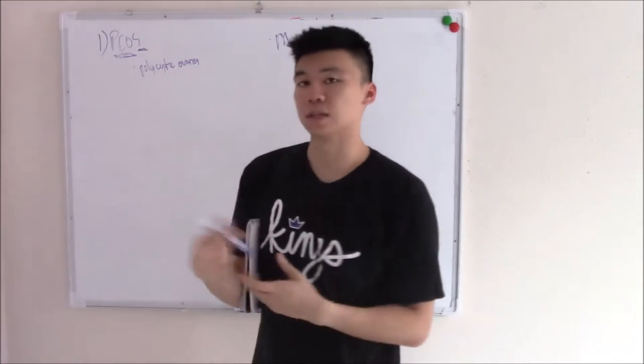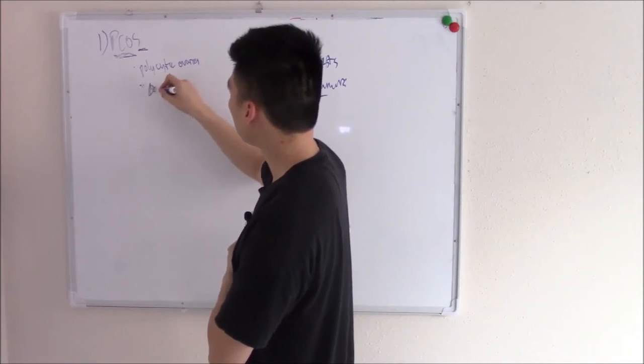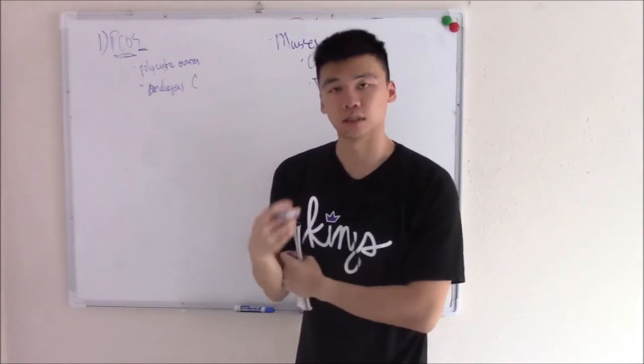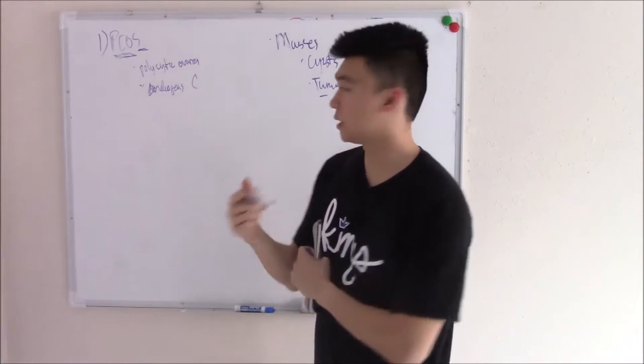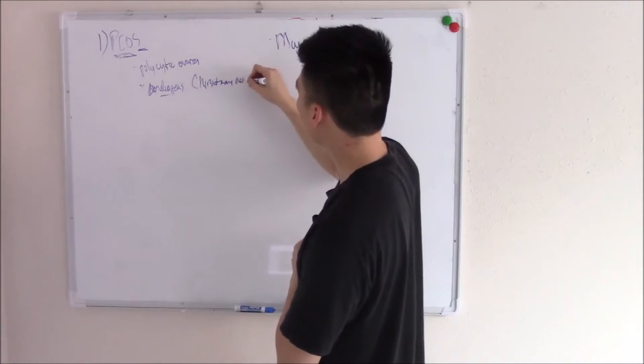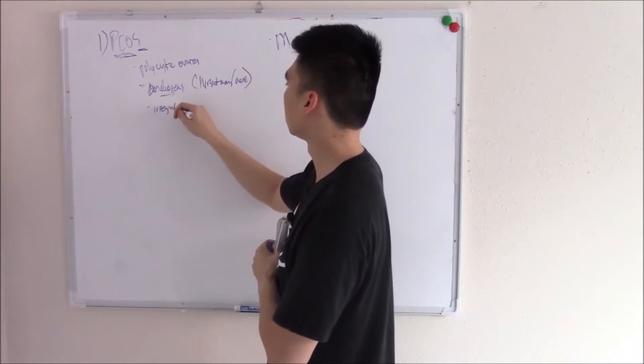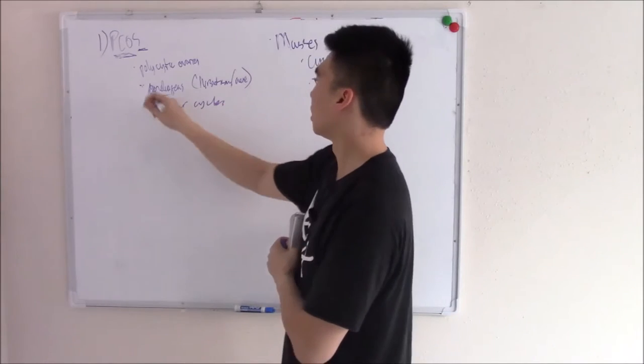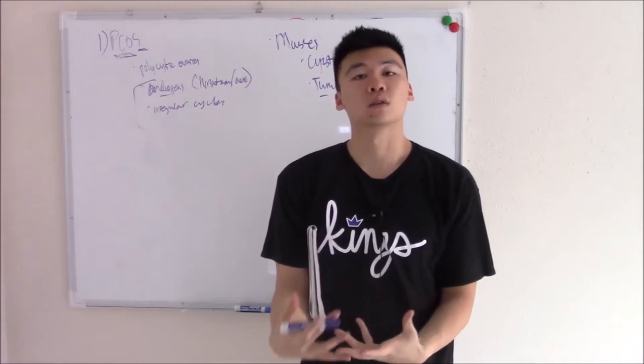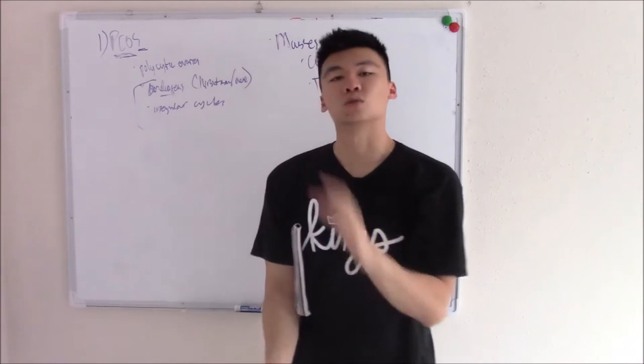The syndrome part of it is because there's a constellation of signs. The biggest is increased androgens, which show up as hirsutism - facial hair, acne, and irregular cycles. A patient with signs of hirsutism and irregular cycles has PCOS. You can make that clinical diagnosis.